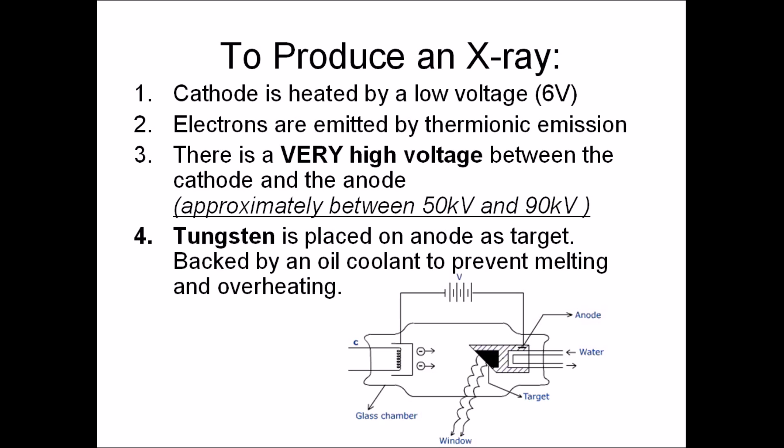In X-ray production, you heat the cathode so it emits electrons by thermionic emission. Then electrons travel incredibly fast from the cathode to the tungsten target on the anode. Tungsten is used because it has a high melting point.